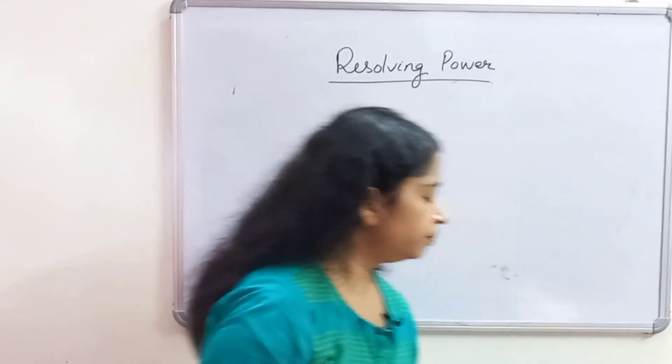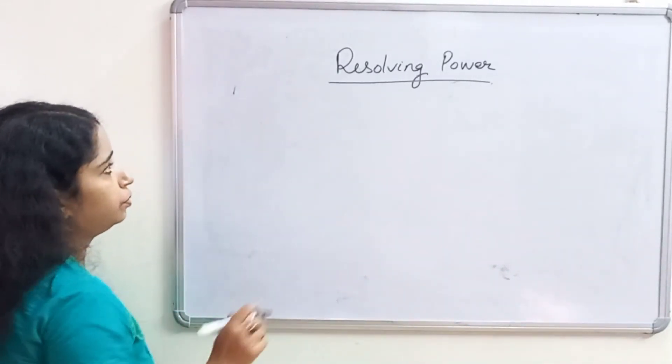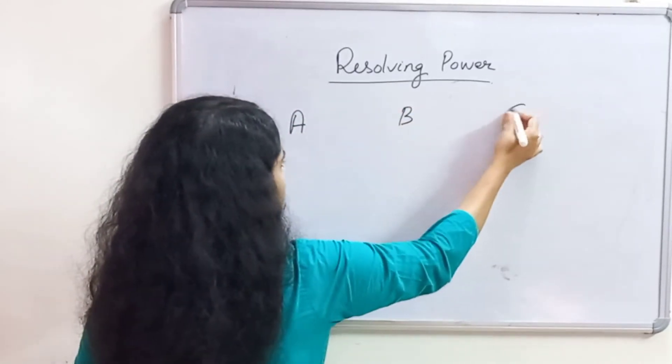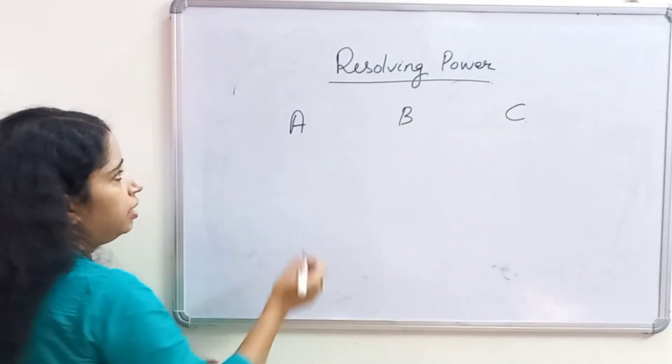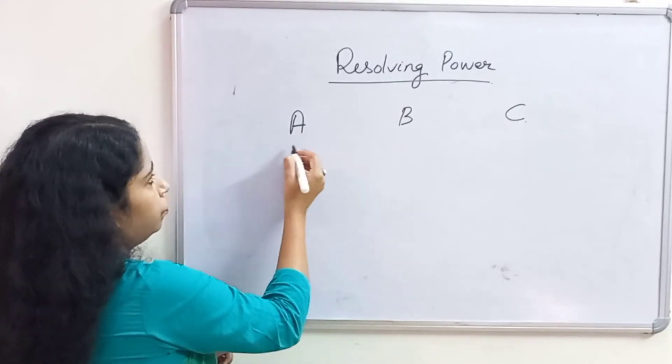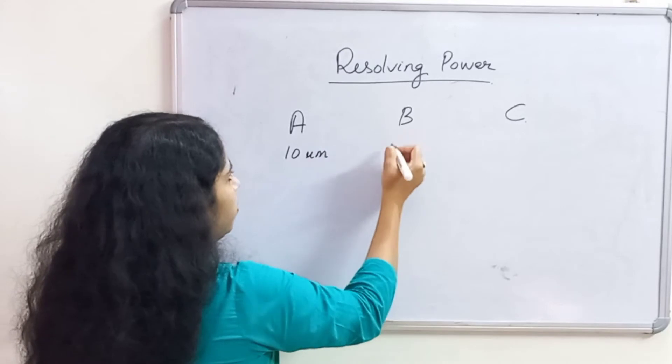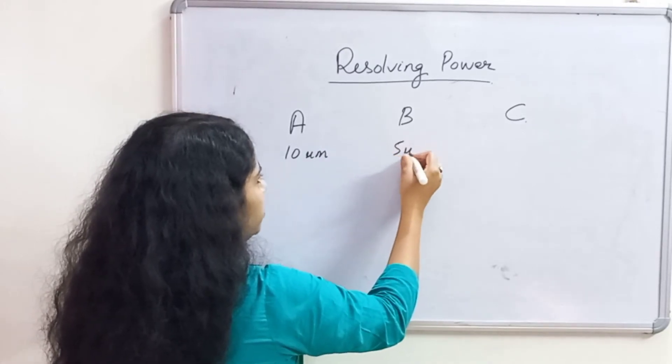Now let us take three microscopes: A, B and C. Limit of resolution of microscope A is 10 micrometer. Microscope B is 5 micrometer.